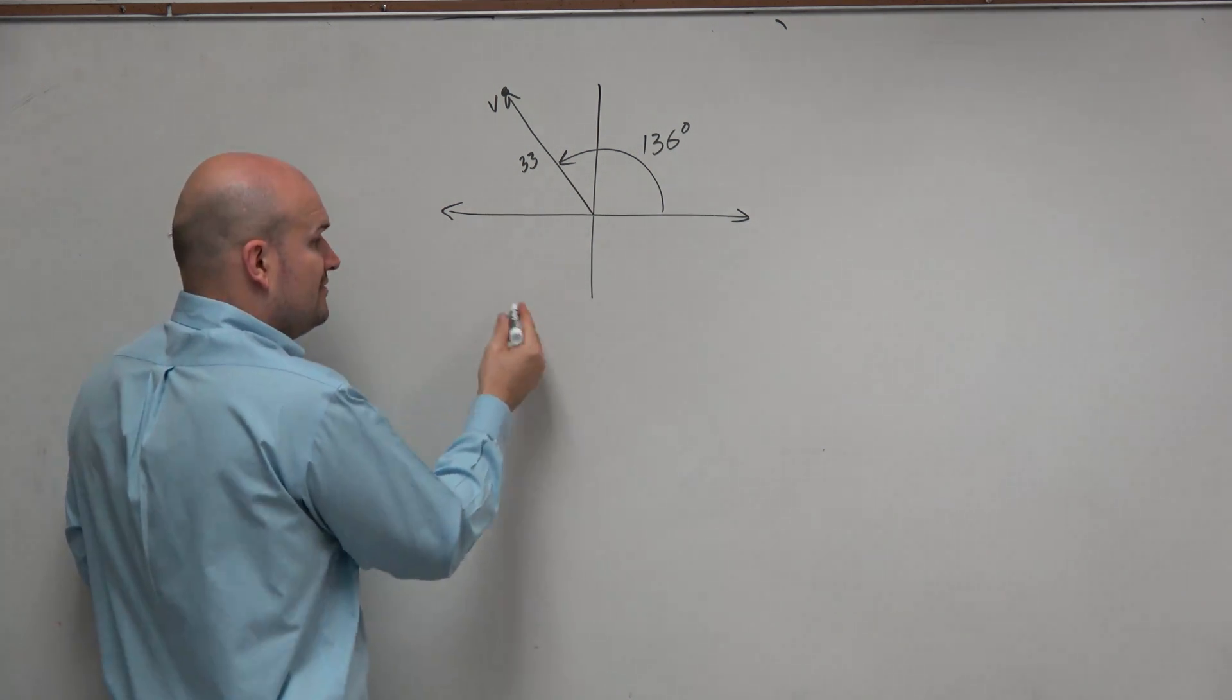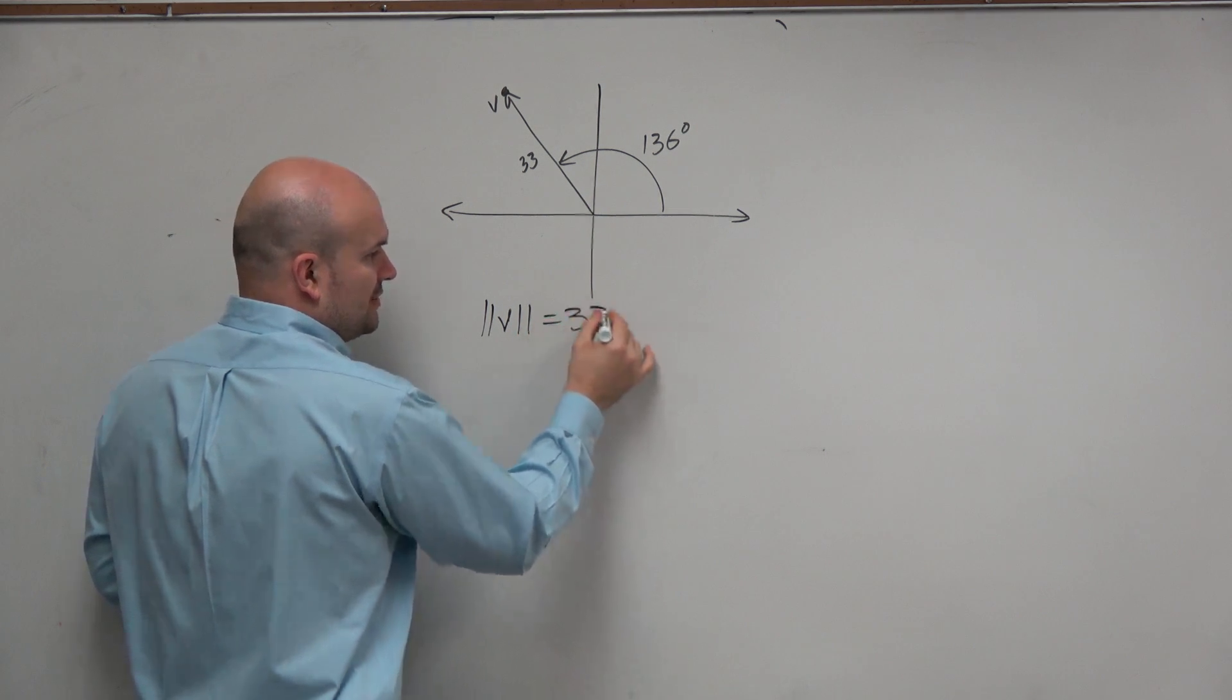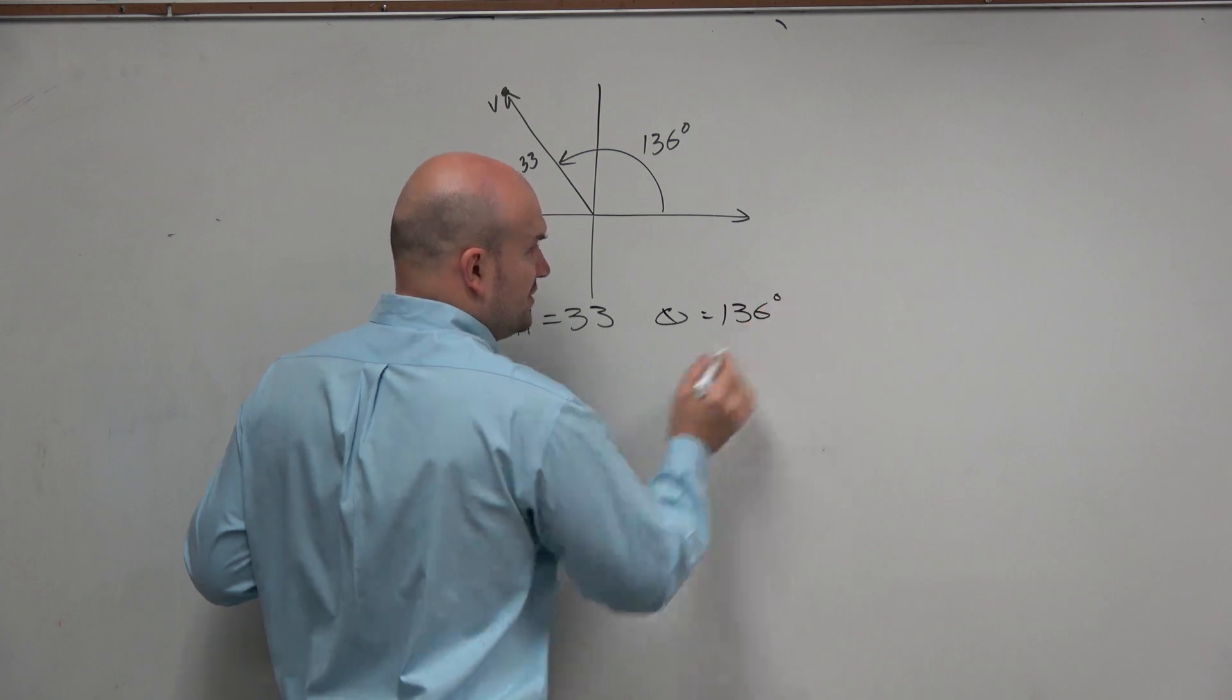So let's just write down things we have. We know the magnitude of the vector v is equal to 33, and we know the angle of the vector is equal to 136 degrees.